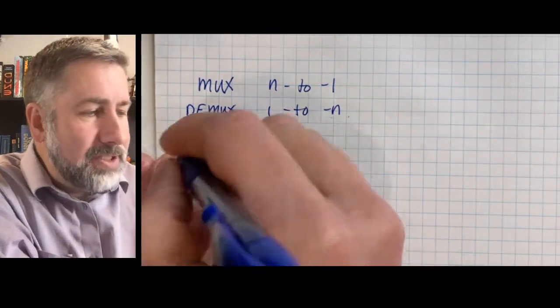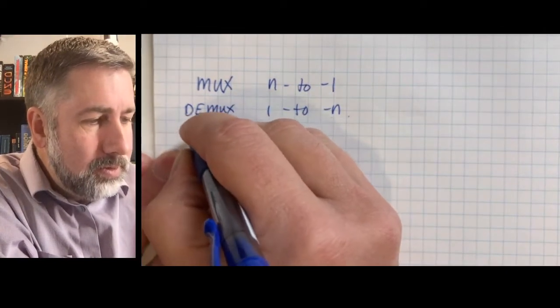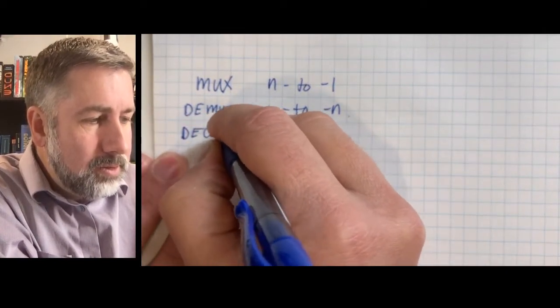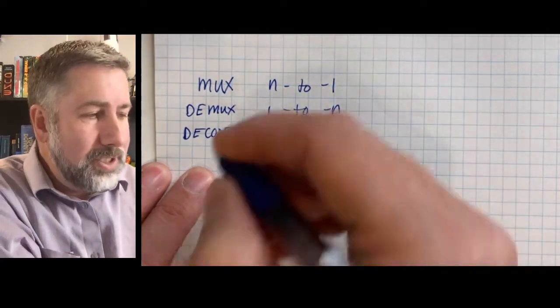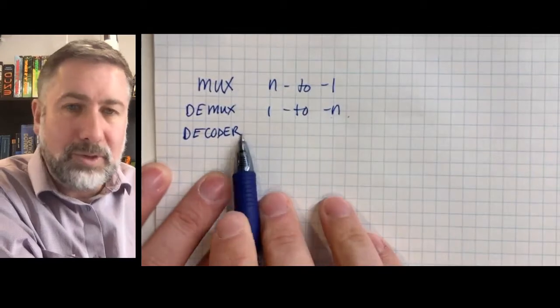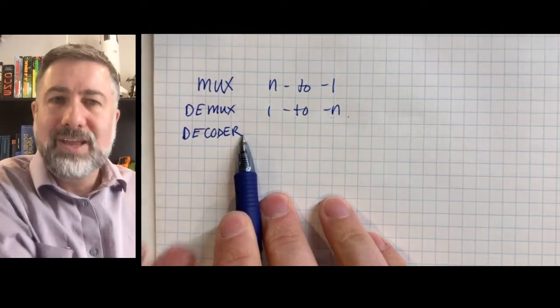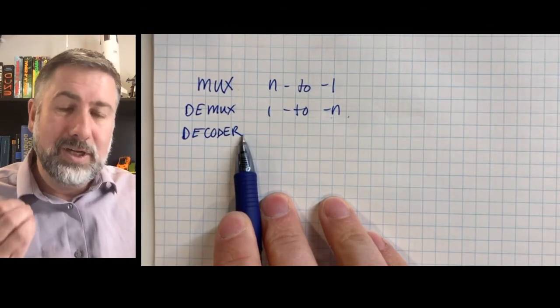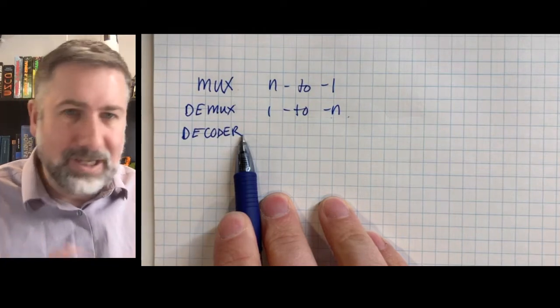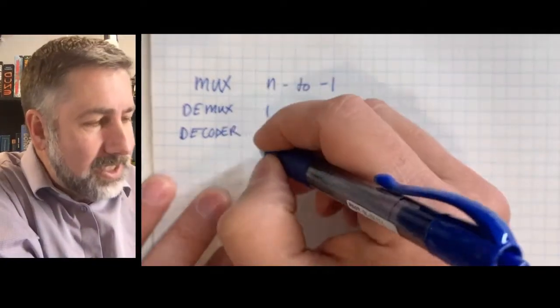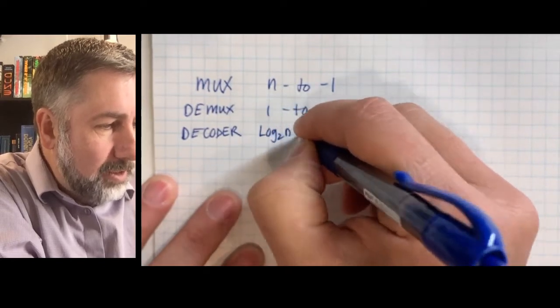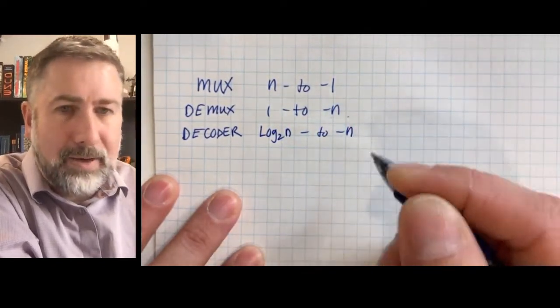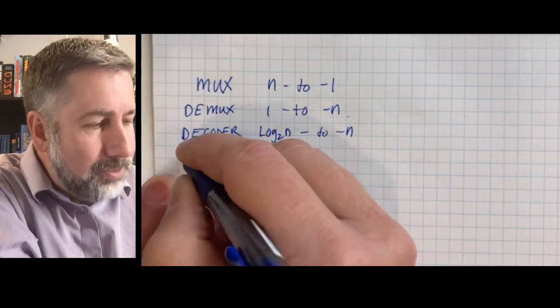Then you have a decoder. And a decoder again is just like a demultiplexer. So when we talk about decoders and encoders the number of inputs is the number of select lines, the number of address lines. So this is going to actually be log base 2 of n to n and the encoder is going to be n to log base 2 of n.